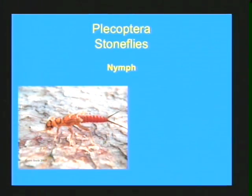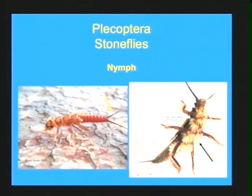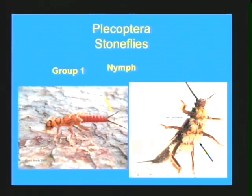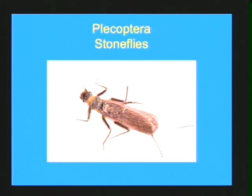The second group we're going to look at are the stoneflies, or Plecoptera. The nymphs always look more like little cockroaches that live in the water. They do have wing pads developing — those external wing buds — and they have two tails. On the underside you want to confirm that they have gills on their thorax. Remember, mayflies may have two tails but have gills on the abdomen, whereas stoneflies always have gills on the underside of the thorax. They are also very sensitive to pollution and are placed in group one. Adult stoneflies — Plecoptera literally means 'braided wing' — have heavily veined wings, look very similar to the larva, and hold their wings flat over their abdomen, much like a cockroach.